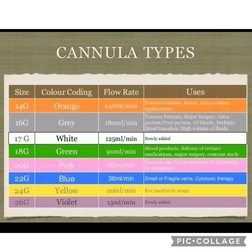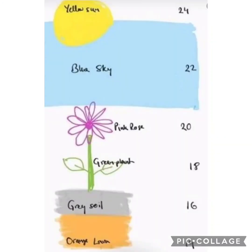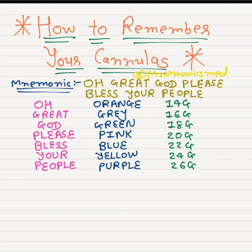You can take a screenshot of this chart and easily remember it. To remember via a story: think about soil — lava is orange color, so it is 14 gauge. Above that is gray colored soil, so remember 16 gauge. Above that are plants, which are green, so 18 gauge. Above that are flowers, so it is 20 gauge. Above that is sky, so it is 22 gauge, and there is also a sun — remember 24 gauge.